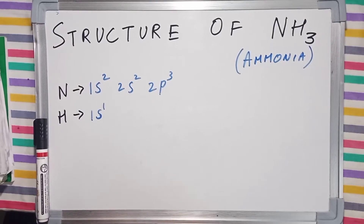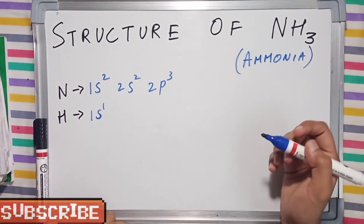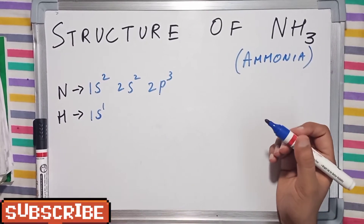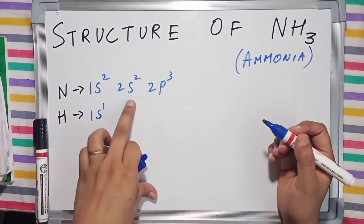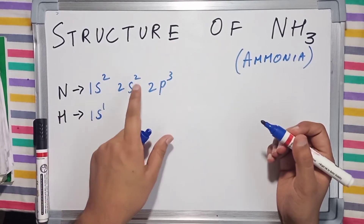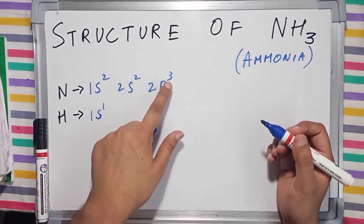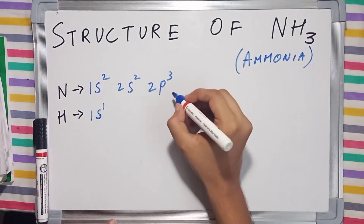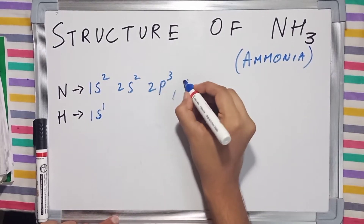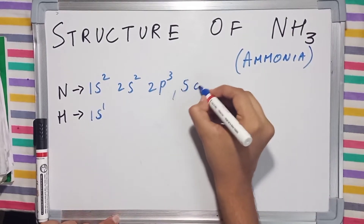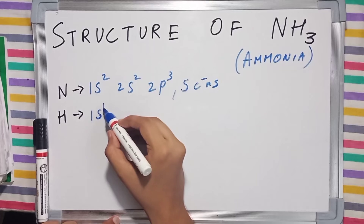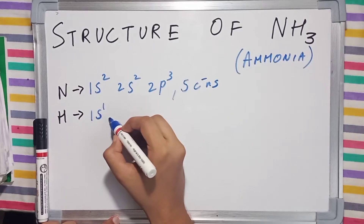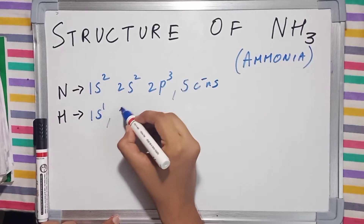We are going to draw the structure of NH3, which is also known as ammonia. Notice the number of valence electrons in nitrogen, which is 2 plus 3, which is 5 valence electrons. And hydrogen has a single valence electron.